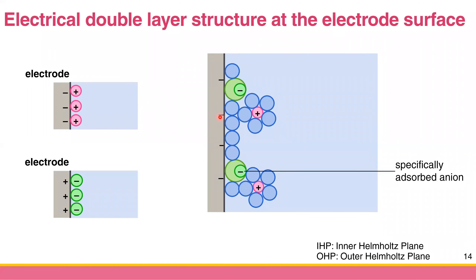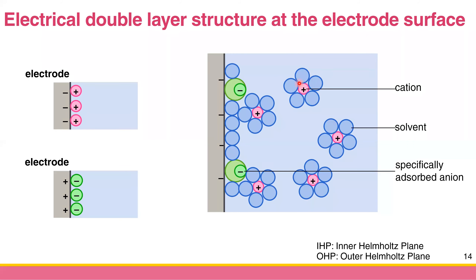The second layer is going to be the counter ion layer. Since we apply negative potential, your counter ion is going to be your positive ion — your cation. But it's going to be a little bit further from the electrode surface than the solvent or the specifically adsorbed ions. This cation is actually solvated — surrounded by water molecules. The first layer is called the Inner Helmholtz Plane or IHP, and the external one is called the Outer Helmholtz Plane or OHP.